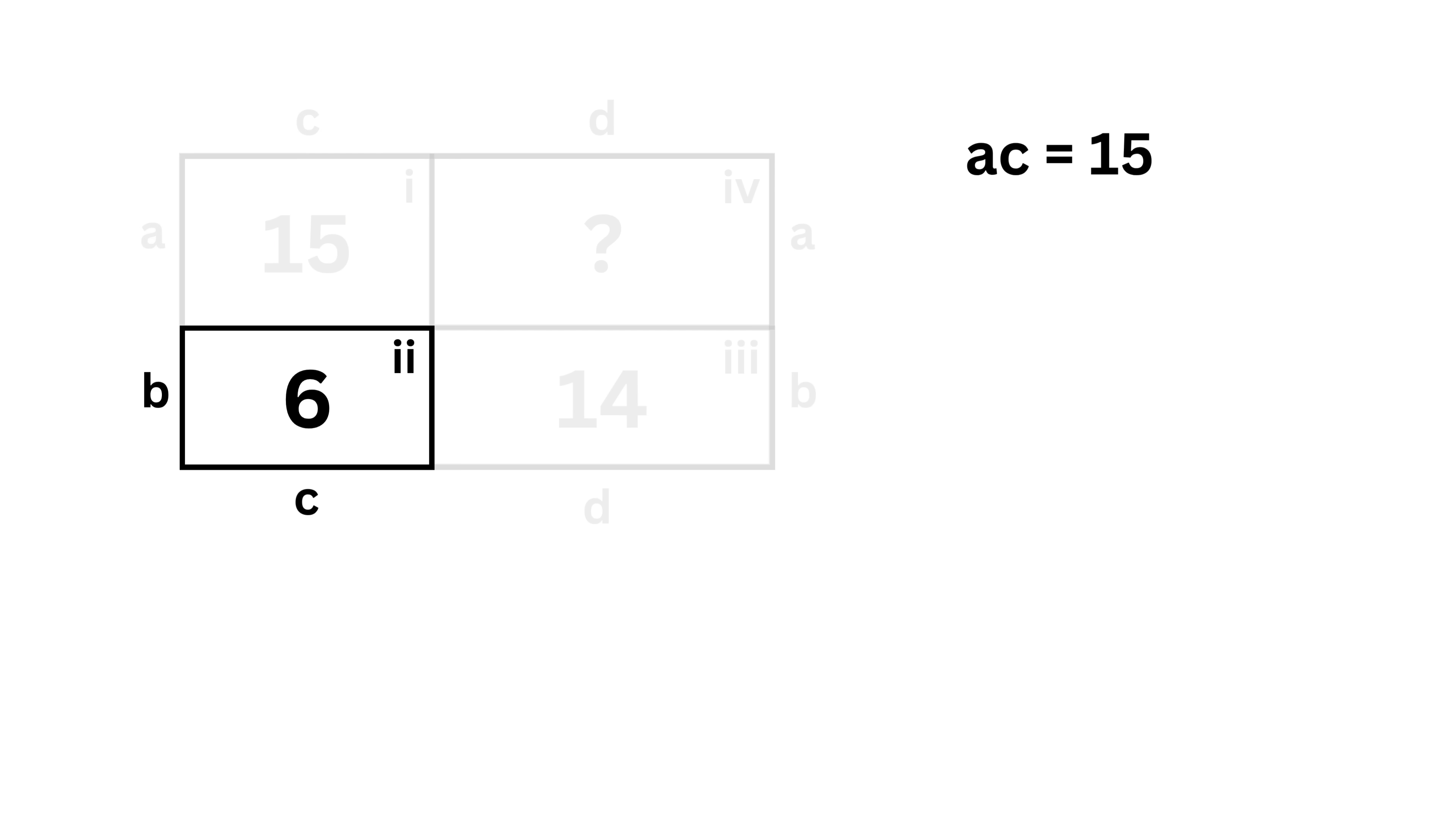Now for portion 2, we have B times C equals 6, because the side lengths of this rectangle are B and C, and its area is given as 6. Similarly, for portion 3, we have B times D equals 14, because the sides are B and D, and the area is 14.